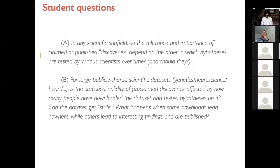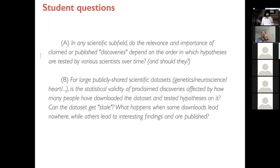The first question: in any scientific subfield — neuroscience, genetics, whatever — do the relevance and importance of the claimed or published discoveries depend on the order in which hypotheses were tested by various scientists over time? A meta question is: should they depend on that order? In science, we test things over time and our discoveries depend on what was found before us.